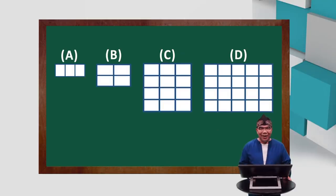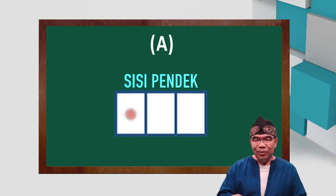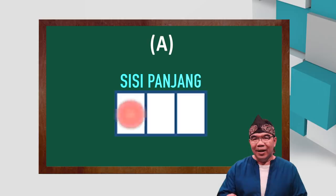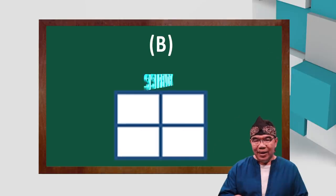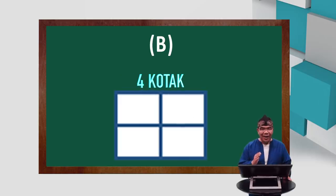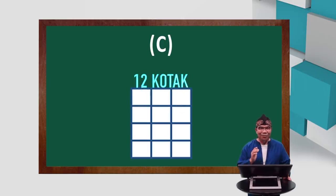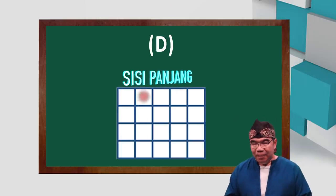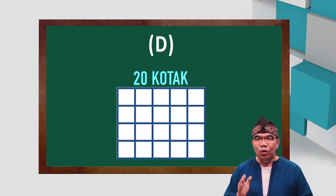Oke, anak-anak, perhatikan gambar berikut. Yang A, sisi pendeknya satu, sisi panjangnya tiga, jumlah kotaknya ada tiga buah. Yang B, sisi pendeknya dua, sisi panjangnya dua, banyaknya kotak ada empat buah. Yang C, sisi panjangnya empat, sisi pendeknya tiga, banyaknya kotak ada dua belas buah. Yang D, sisi panjangnya lima, sisi pendeknya empat, banyaknya kotak ada dua puluh buah.